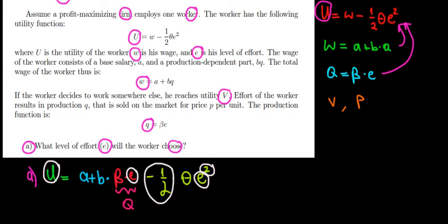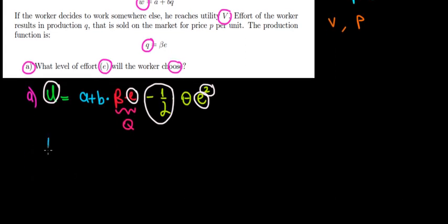The utility derivative with respect to the effort level equals zero. When we differentiate term by term, a is a constant so the derivative is zero. B times beta times E derivative with respect to effort gives us the constant B times beta.